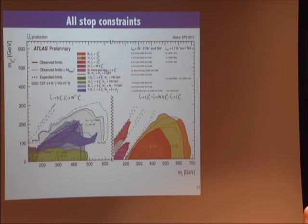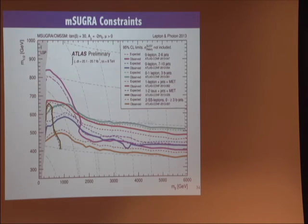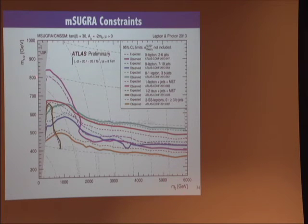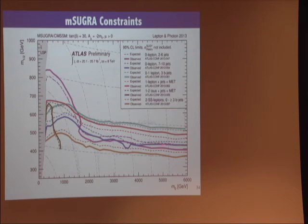This is a plot of LSP mass versus stop mass showing all the different decay modes being attacked by about 10 analyses. The charm-plus-neutralino decay is one; the three-body decay to W, B, and neutralino is another; and direct decay to a top and a neutralino is a third. In the mSUGRA model comparison — not considered a very viable model anymore — the two-to-six-jet analysis is complementary to the three-B-jet zero-plus-one-lepton search, which is weaker at low M0 but stronger at high M0. The seven-to-ten-jet search is also stronger in the high M0 region. These searches are partially complementary.